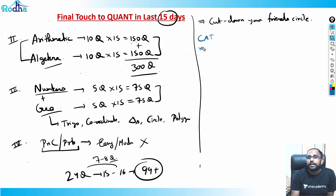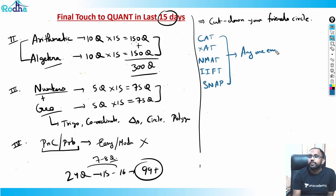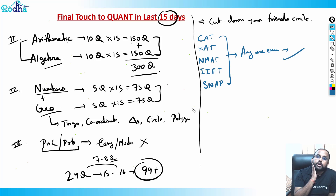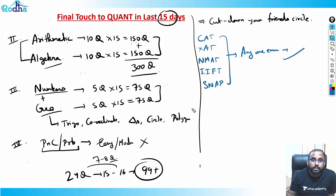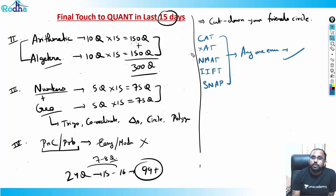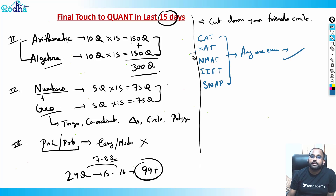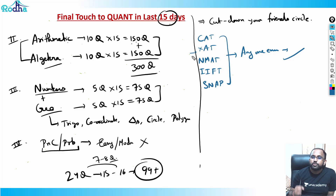Always remember that CAT is one of five exams you're giving — CAT, XAT, MAT, IIFT, and SNAP. If you clear any one with a great percentile, you get the required kickstart for your career. Think about the difference between starting at 1.5 lakh versus 20-30k salary — it's a big difference. Feel confident and give it your best.